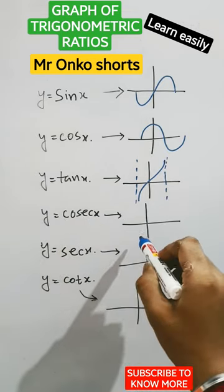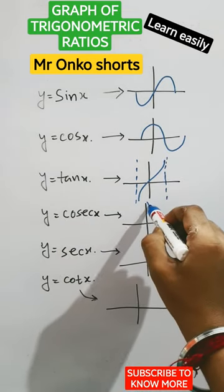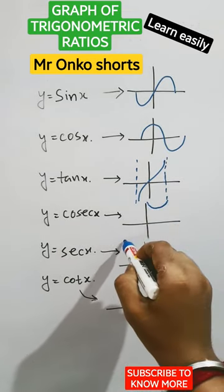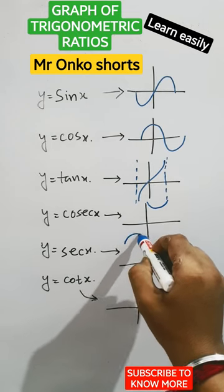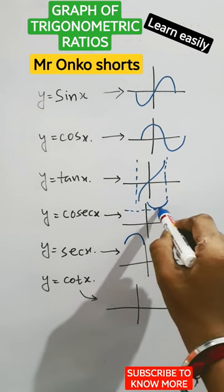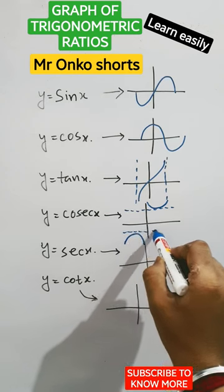Now graph of cosec x, that will be... This is the line, that is x equals to 1, x equals to minus 1.